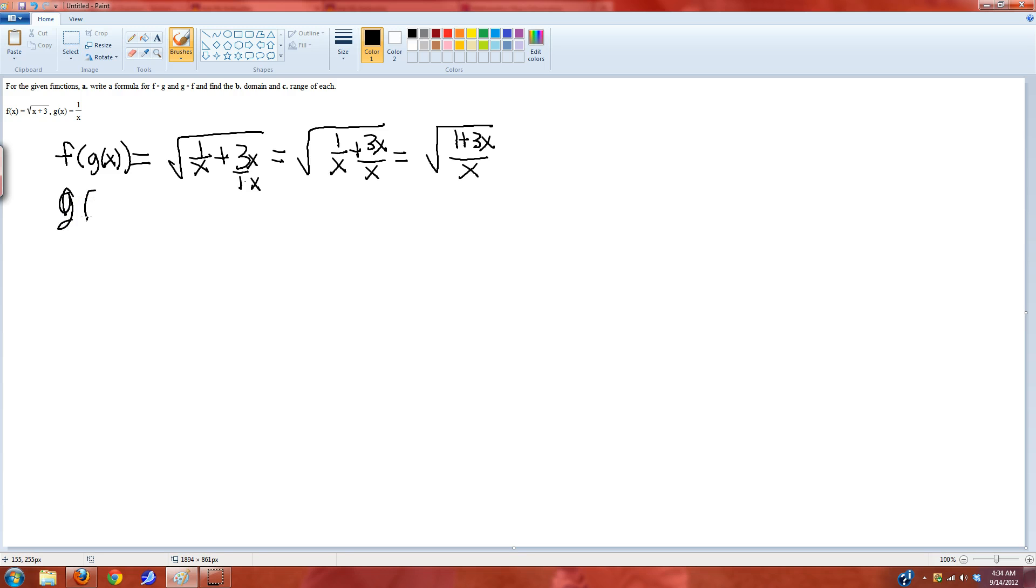Actually, let's do it all the way through. Later, they ask for its domain. What's underneath the square root must be greater than or equal to 0. So 1 plus 3x all over x must be greater than or equal to 0. Now, you have a fraction. When is a fraction positive? It's positive when the numerator and denominator are the same sign.